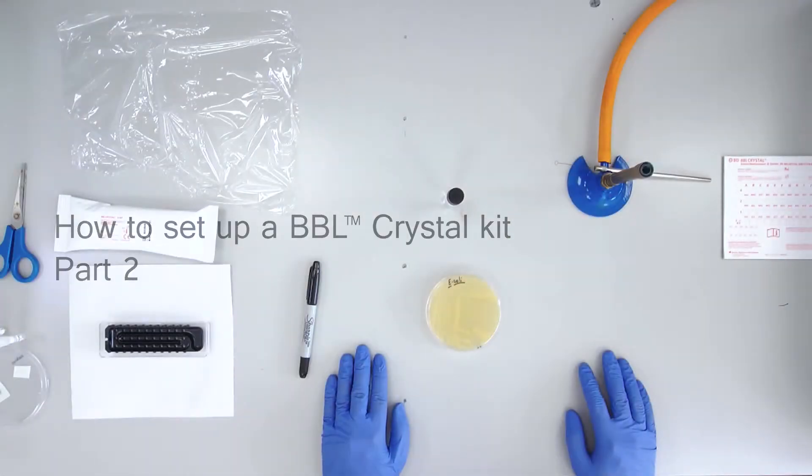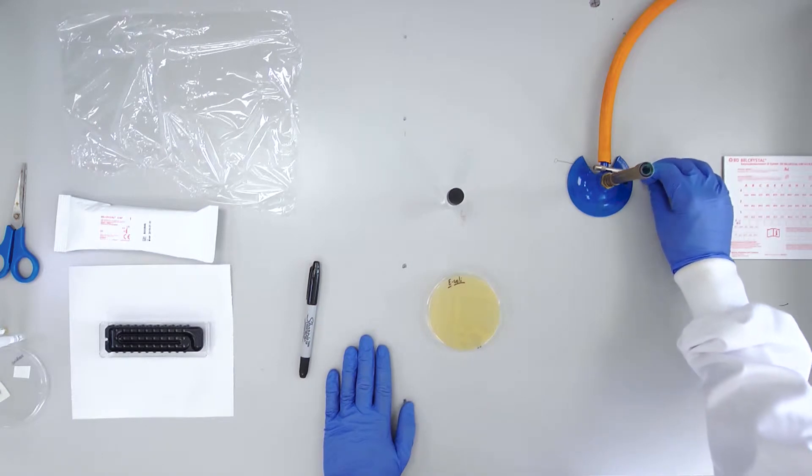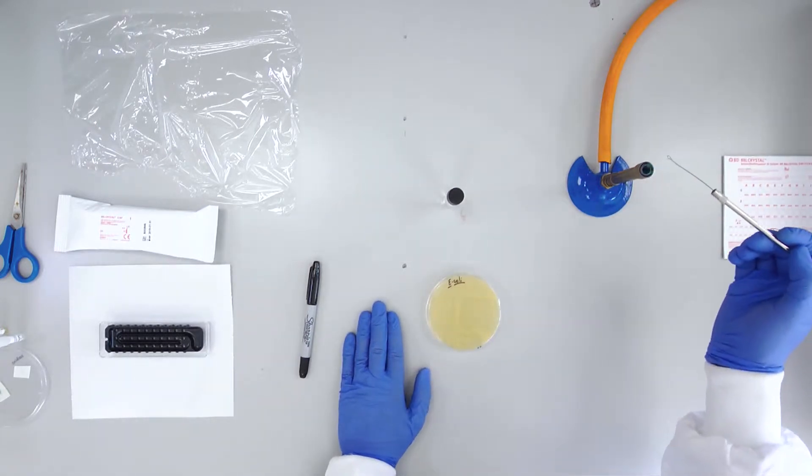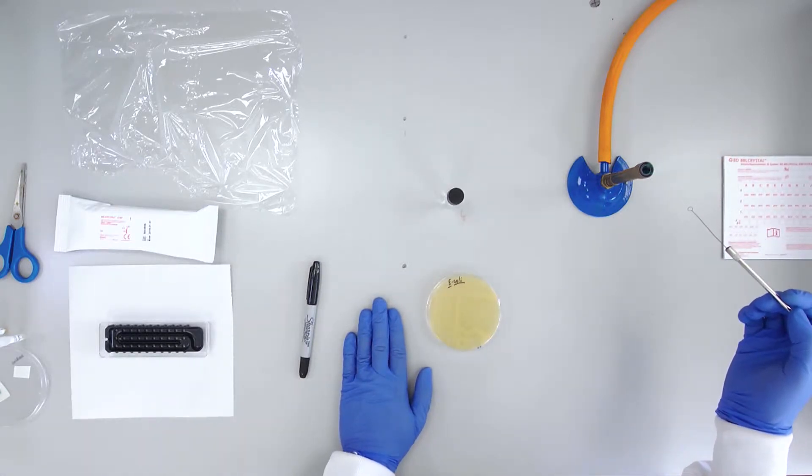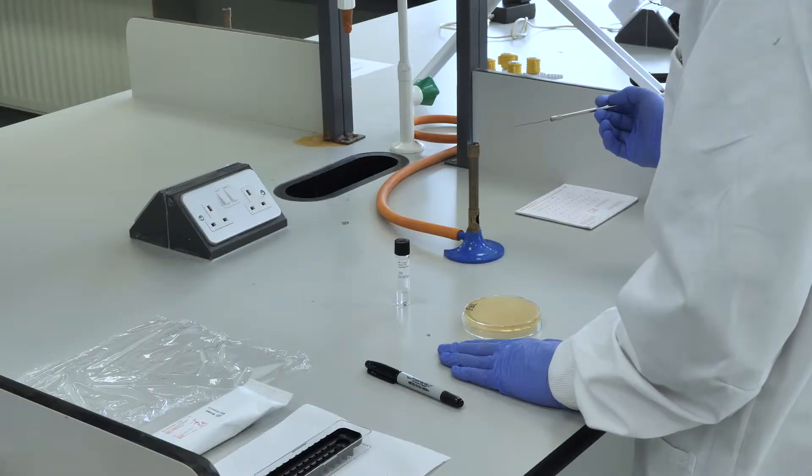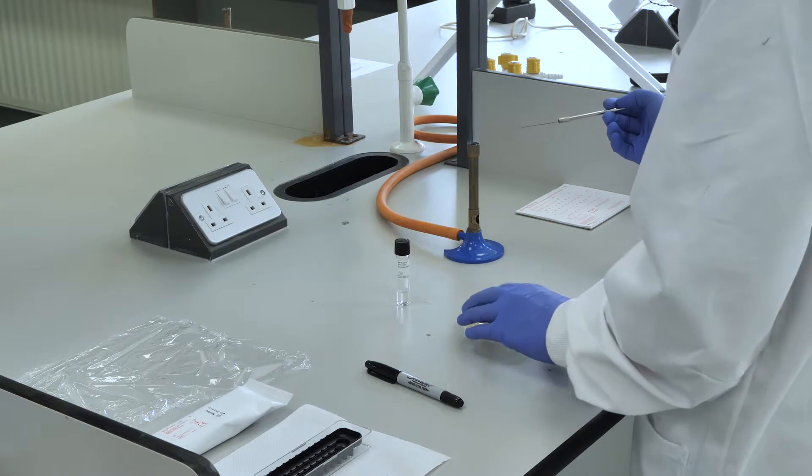How to set up a BBL crystal kit. To set up the BBL crystal kit for identification of enteric bacteria, begin by selecting a large isolated colony from the plate.